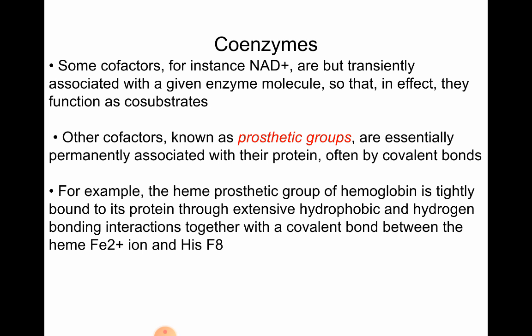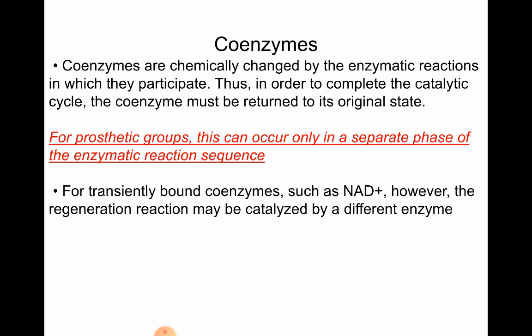For example, the heme prosthetic group of hemoglobin is tightly bound to the protein through extensive hydrophobic and hydrogen bonding interactions, together with a covalent bond between the Fe2+ ion and the coenzyme. Coenzymes are chemically changed by the enzymatic reactions in which they participate.